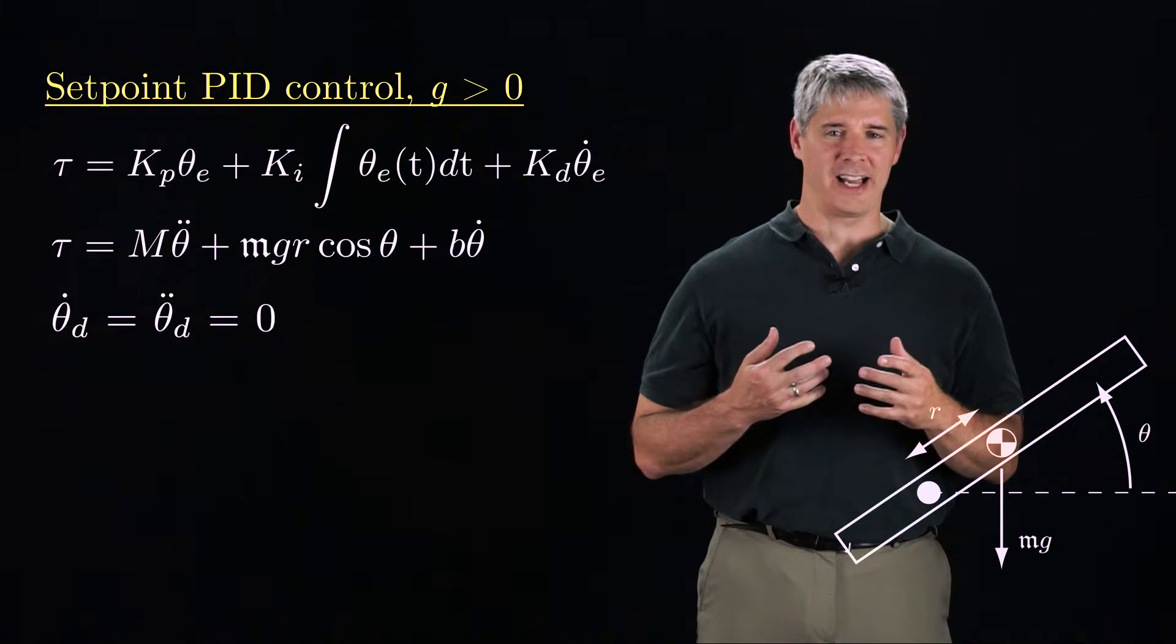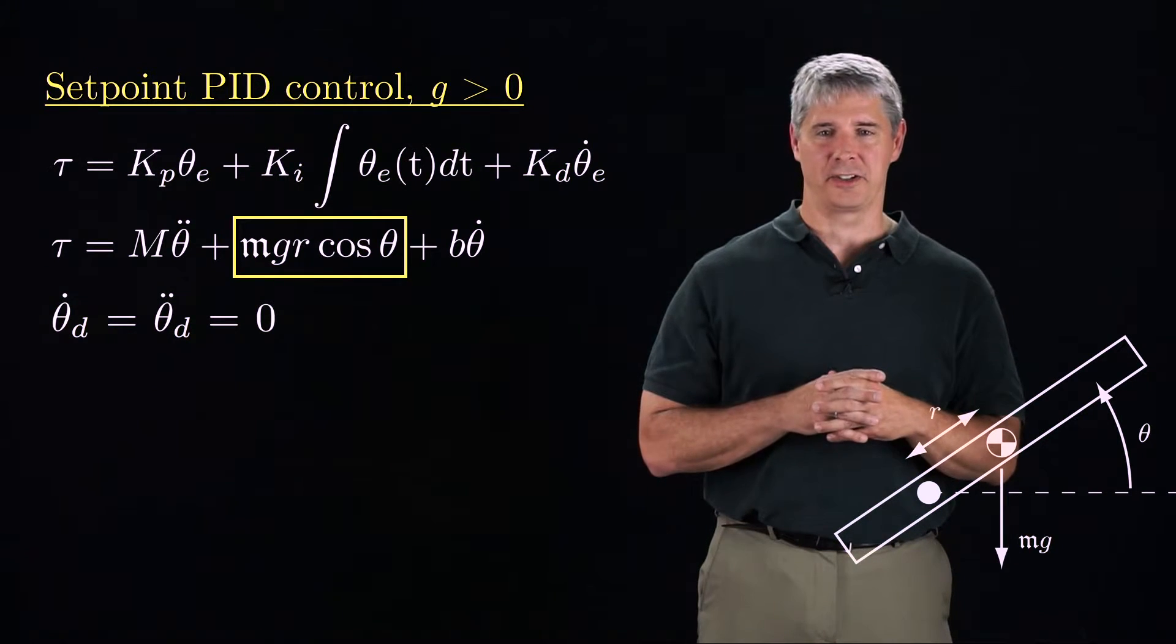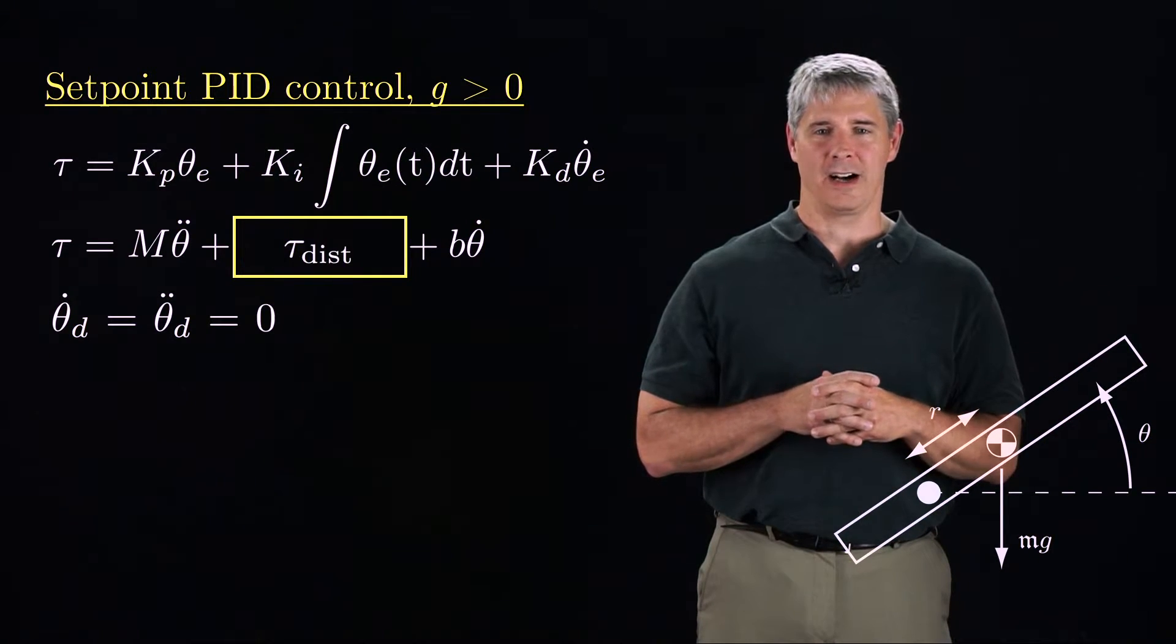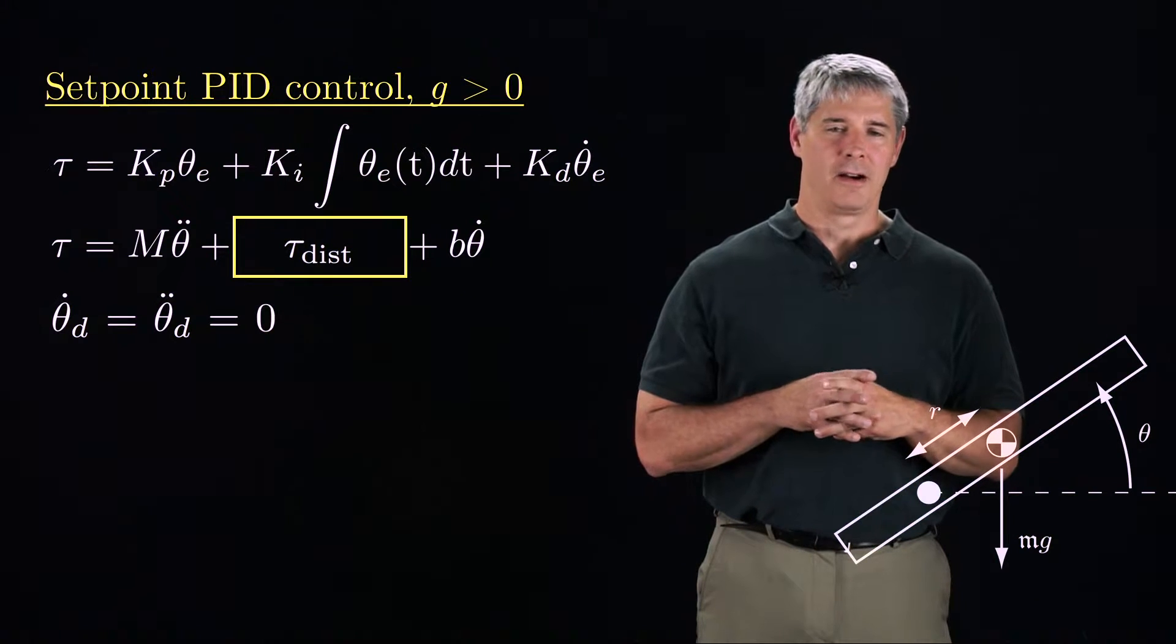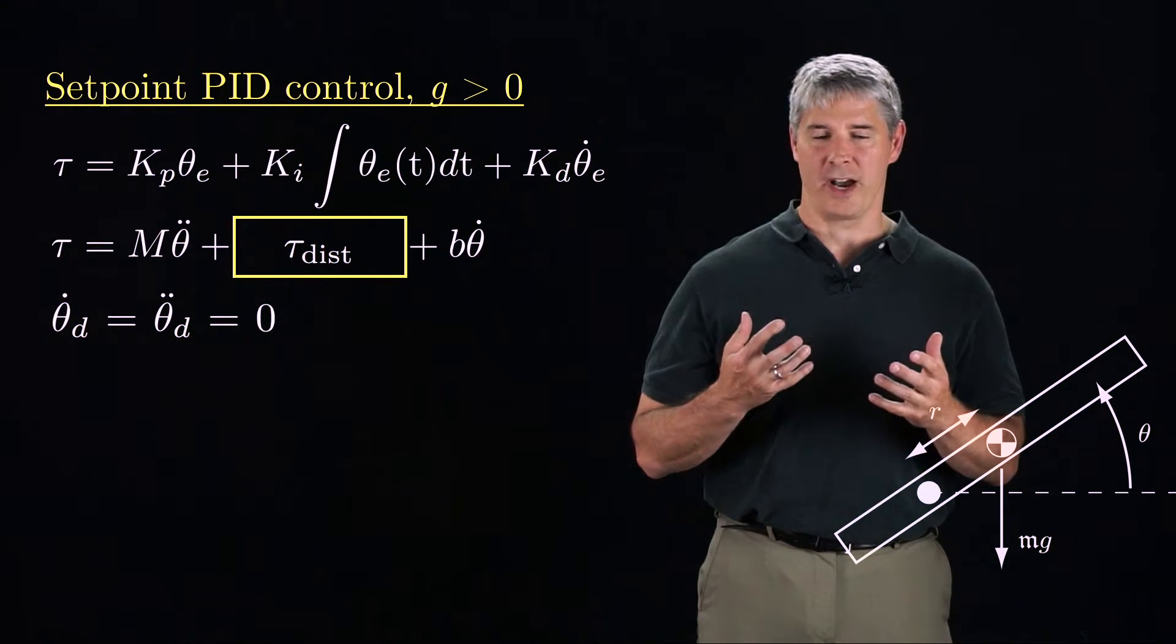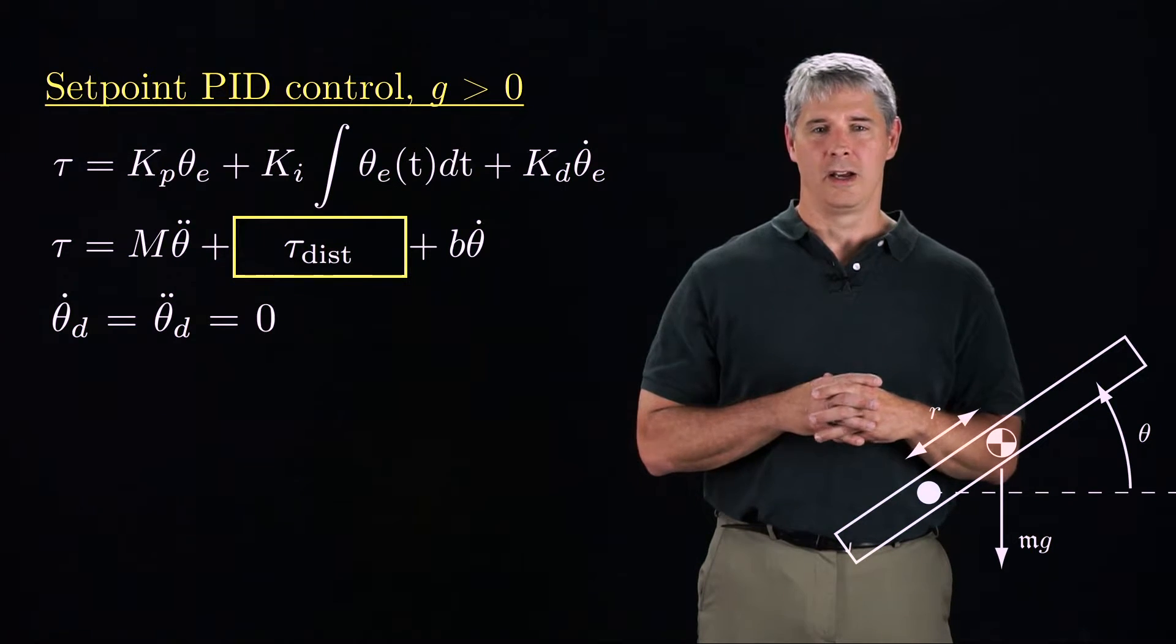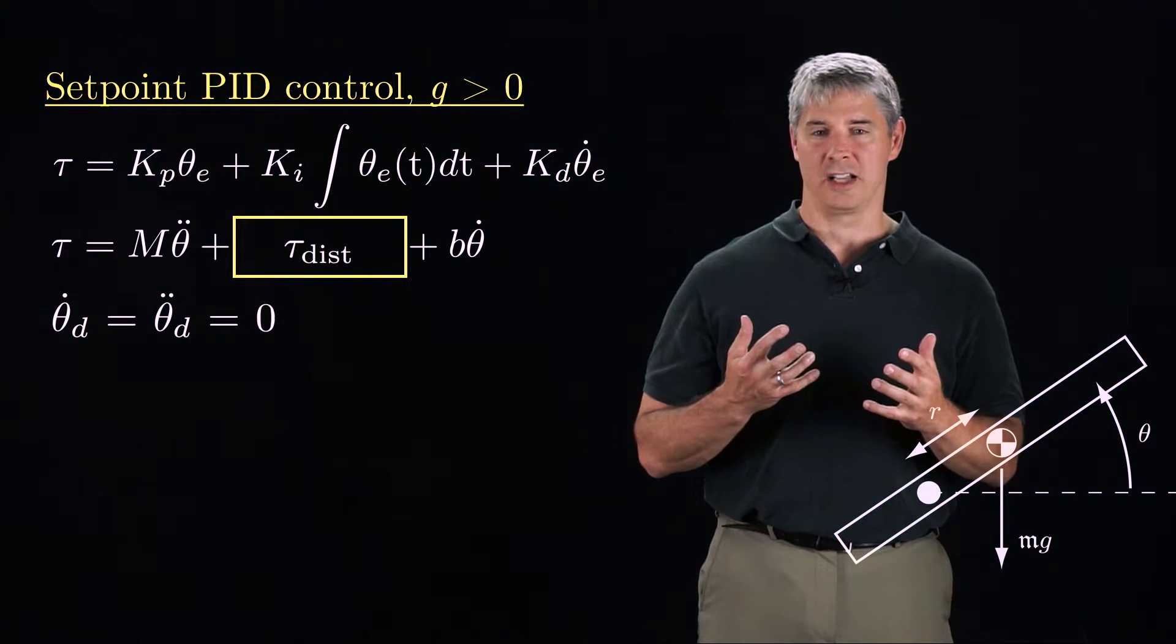To perform a linear analysis, we have to address the nonlinear term that depends on the cosine of the angle. I'll replace this term by a constant, tau disturbance. Replacing by a constant is justified in the upcoming analysis, since I'll be considering the steady-state behavior of the controlled robot when this nonlinear term approaches a constant.